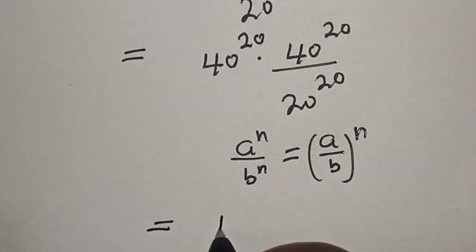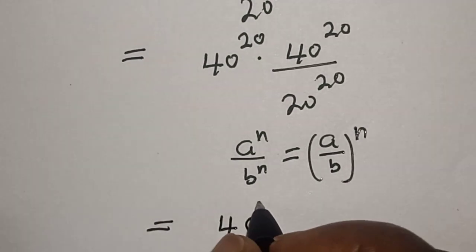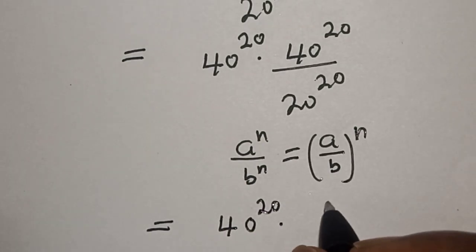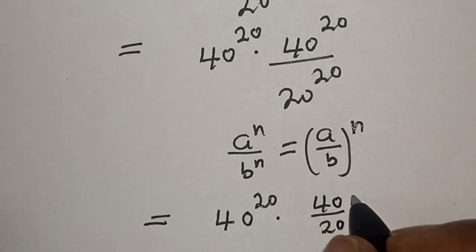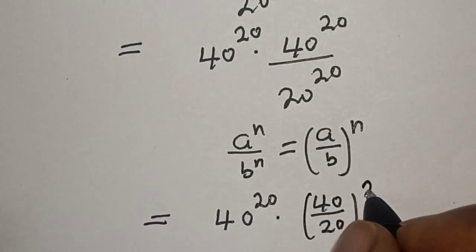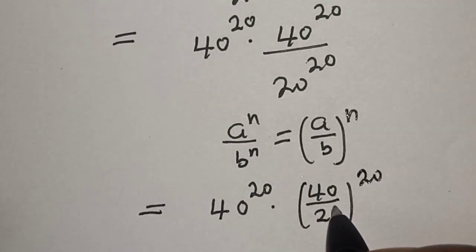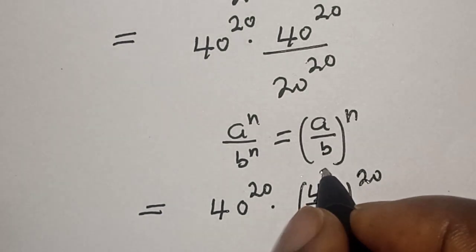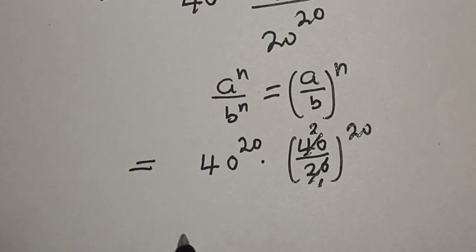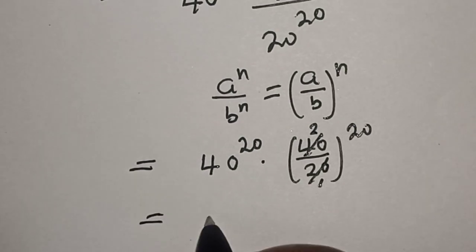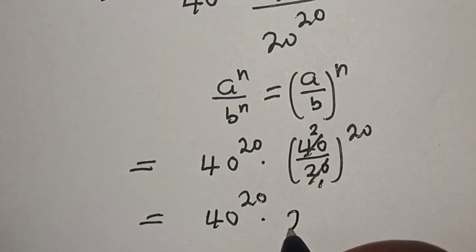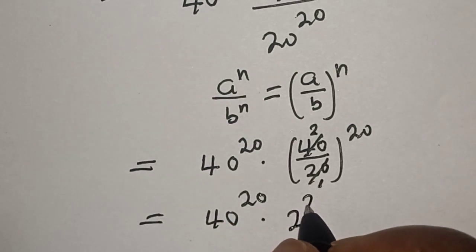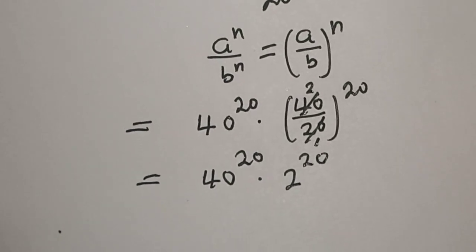Applying that rule, we have 40 to the power of 20 divided by 20 to the power of 20, which gives us 2 to the power of 20. So the expression becomes 40 raised to power 20 multiplied by 2 to the power of 20.